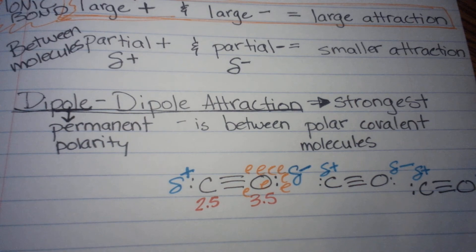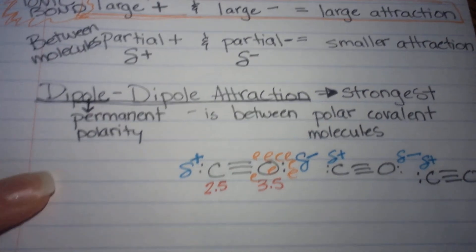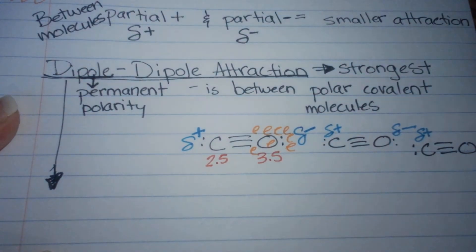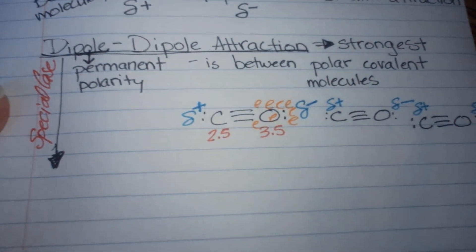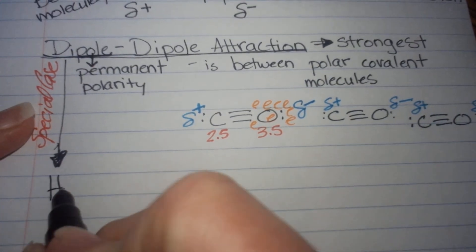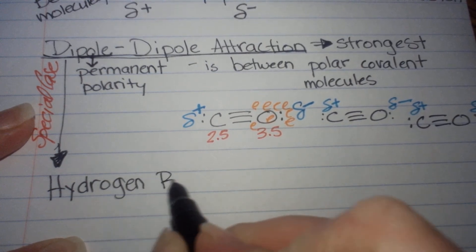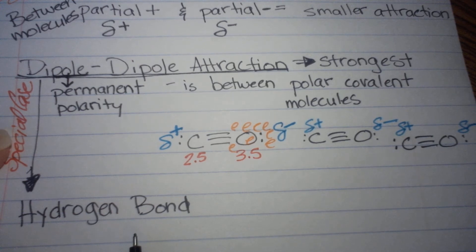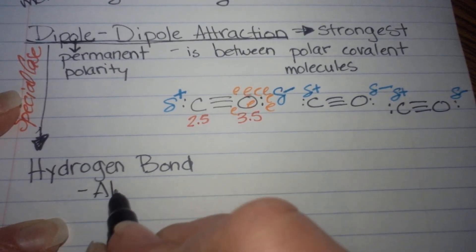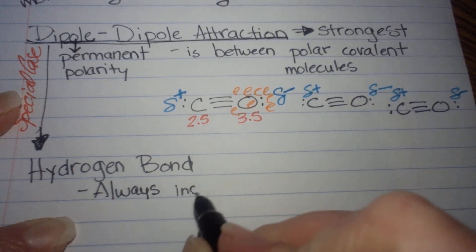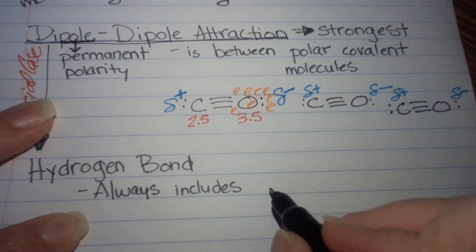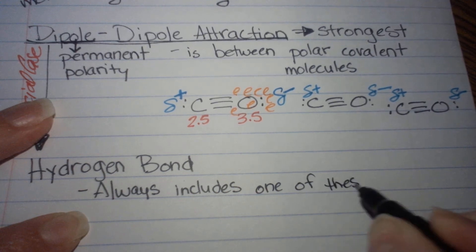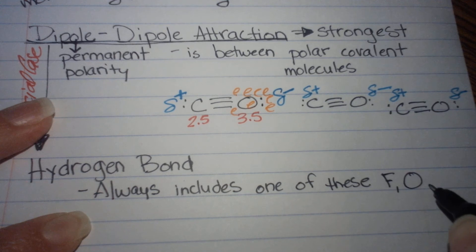Now, there is a special case of dipole-to-dipole attraction called a hydrogen bond. Everything set up for dipole-to-dipole is the same, and we're going to add something: a hydrogen bond always includes one of these — fluorine, oxygen, or nitrogen.